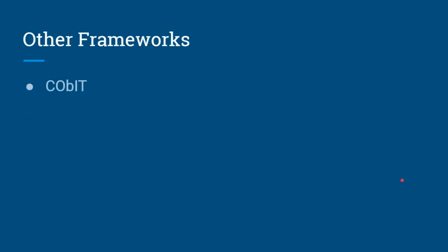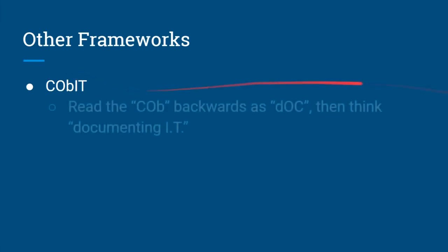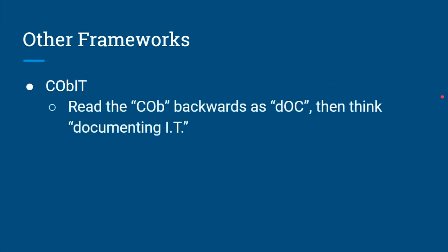A couple of other frameworks. I covered COBIT in another video. The best way to remember COBIT is to simply read 'COB' backwards as 'DOC' and then add IT — so 'documenting IT.' That's the best way to memorize that one: read COB backwards as DOC and think 'documenting IT.'